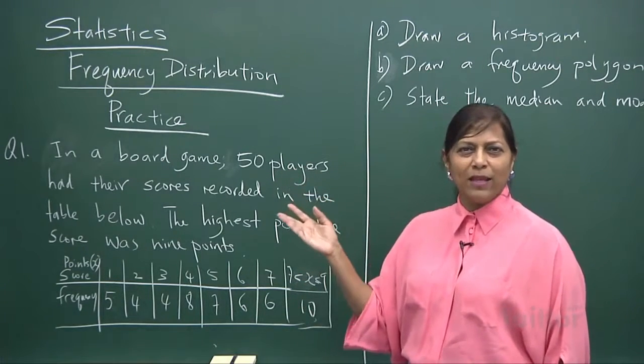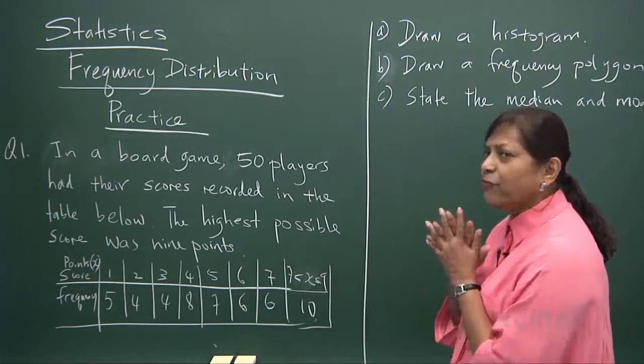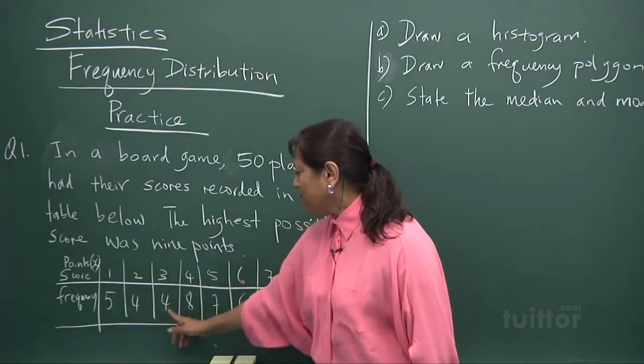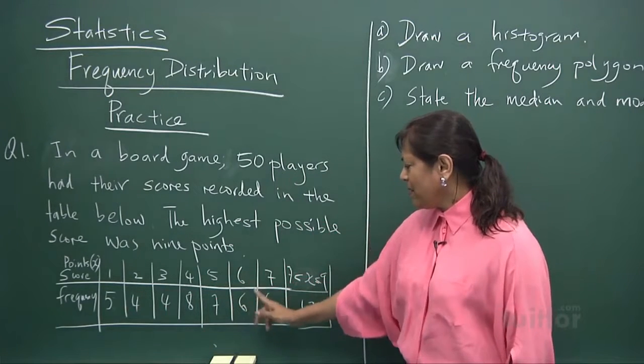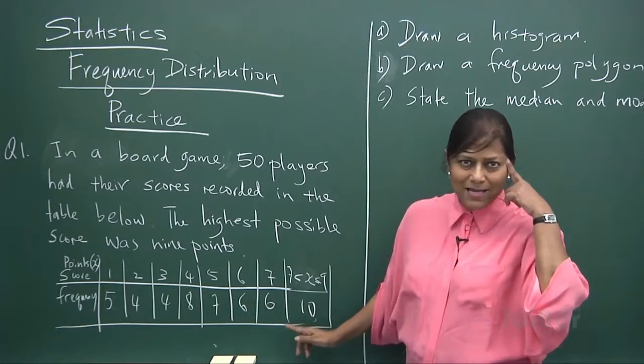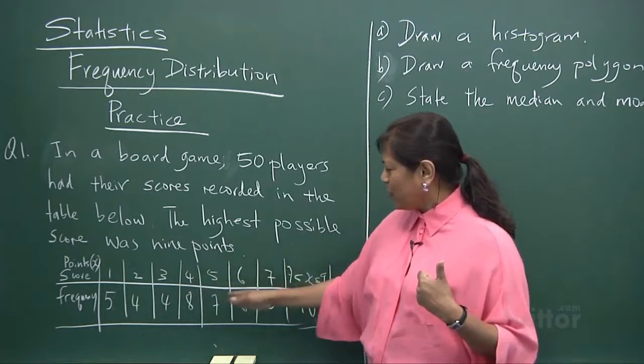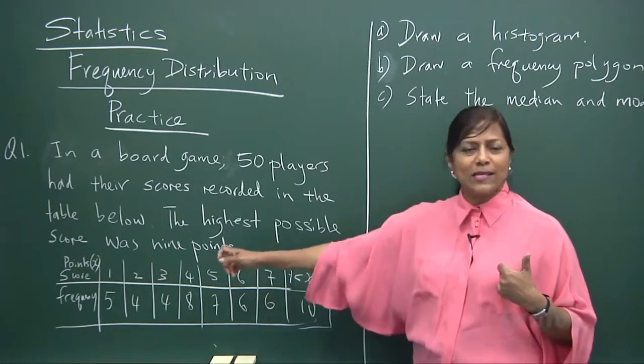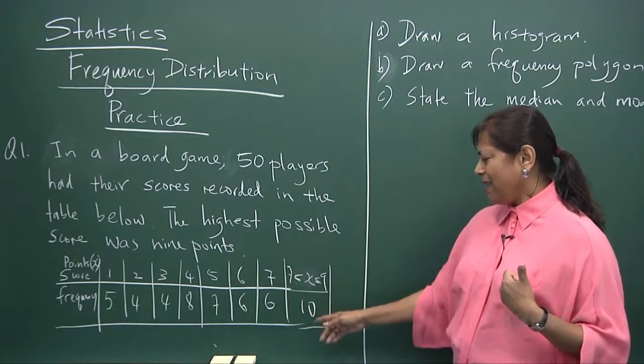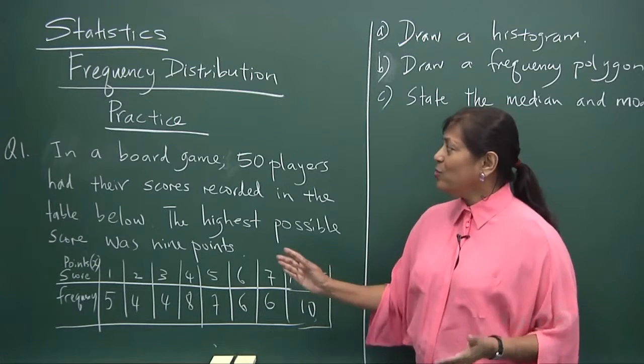So in this practice drill you're given that in a board game 50 players had their scores recorded in the table below. And the highest possible score was nine points. There are many kinds of board games that you will be playing. Monopoly, whatever board games there are. But this unique board game had these points. And let's look at the frequency. A quick look. My dear, when you add them up: five plus four plus four plus four plus eight plus seven plus six plus six plus ten, they sum up to 50. Do it mentally. Do you see that? Great.